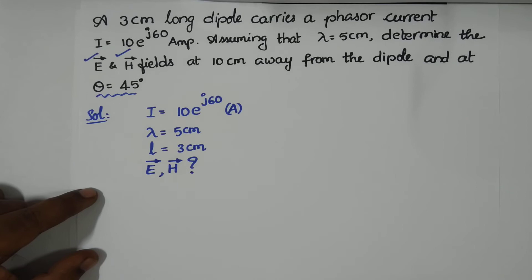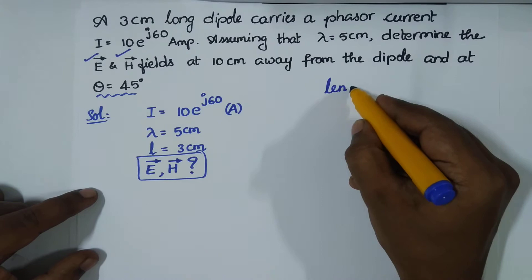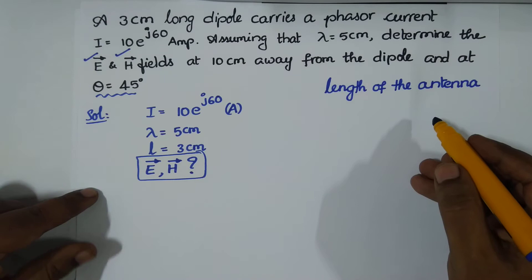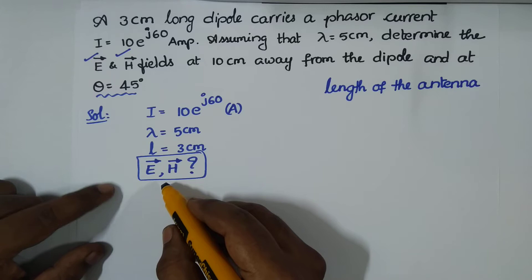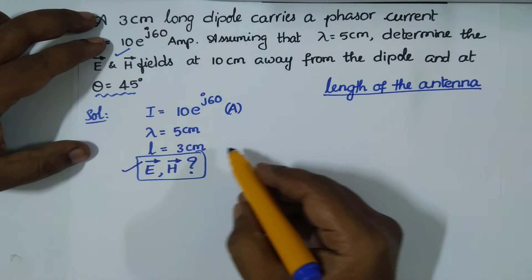Before we find the fields, we have to determine the type of antenna based on its length. Based on the length of this dipole antenna, we can determine which field forms to use for E and H in the far field regions. The length of the antenna decides the field forms for E and H. So we have l = 3 centimeters.